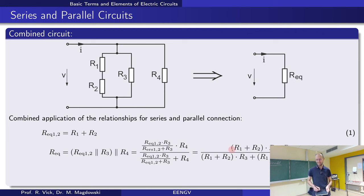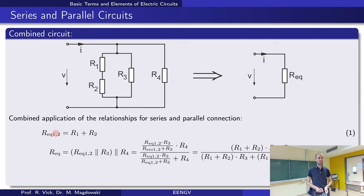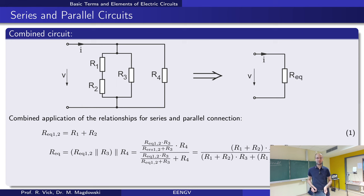Usually at the end of such a calculation you get a very long equation. You can make your life much easier if you have values and insert them as early as possible. Each intermediate step just gives you a new number with a unit, so calculating symbolic general equations like this only needs to be done if you don't know the values and want a general expression for the total equivalent resistance of such a circuit.